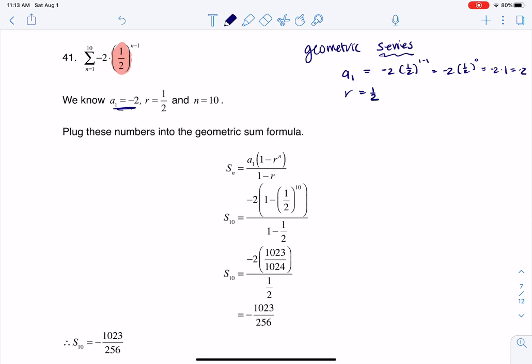And then I do have a formula for a geometric partial sum, there it is. So I'm literally going to plug in my numbers for that. I'm going to plug in negative 2 for a sub 1, I'm going to plug in 1 half here and here, and then for n I'm going to plug in 10. That's what you see me doing at this step.